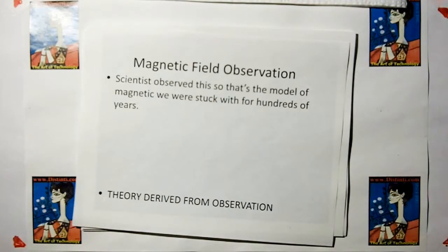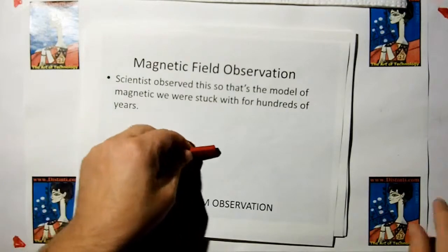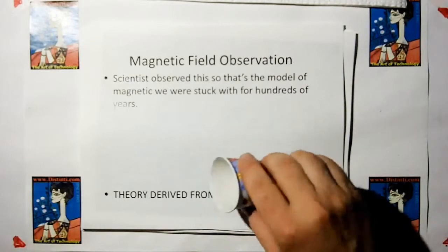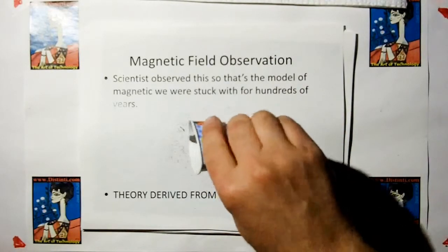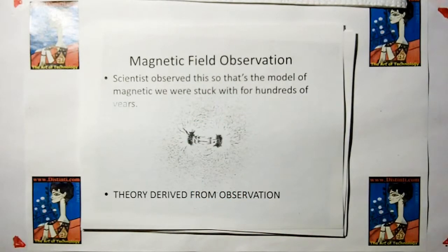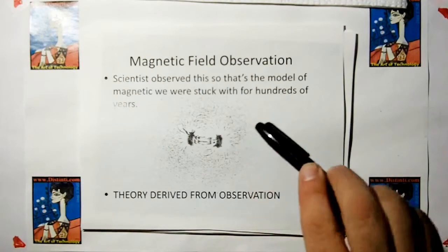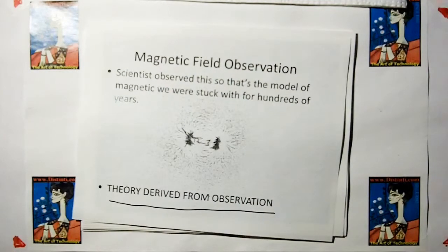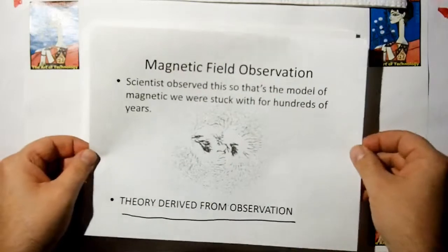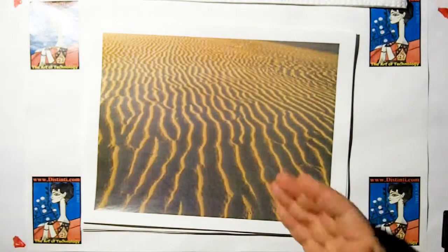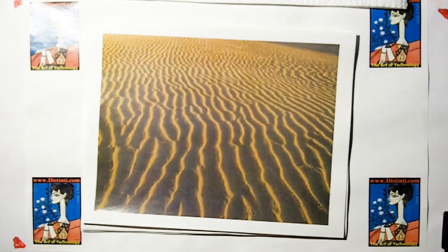Here's another falsity that we derive directly from observation. If I take this little magnet and put it underneath the paper and grab some iron filings, we're going to see a magnetic field form. That actually came out better than I'd hoped. Mankind saw this and they made this their theory for the magnetic field. Again, another theory derived from observation. I'm going to show you in later videos that the magnetic field model is incorrect.